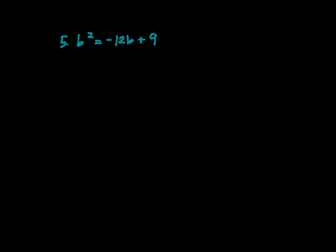So let's go ahead and solve number 5. Let's find some zeros for this parabola. Now everything needs to be in standard form, so I'm going to move the negative 12 and the 9 over. So that becomes b squared plus 12b minus 9 equals 0. Let's identify our a. a is 1, b is 12, and c is negative 9.